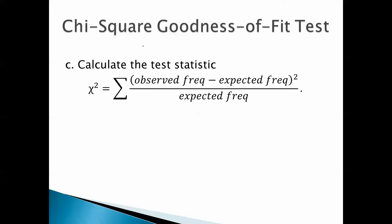Let's calculate the test statistic. Now, again, this is chi-square. I know it looks like an x, but it's not. It's a chi. That's the Greek letter chi. It's not chi, it's chi. Chi-square is the sum of the observed frequency minus the expected frequency, squared, all over the expected frequency.